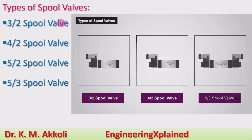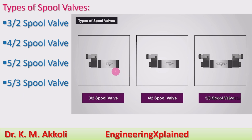Here, in the spool valve, there are different types. Those are the 3 by 2 spool valve, 4 by 2 spool valve, 5 by 2 spool valve, and 5 by 3 spool valve. Some valves are shown with their symbols: the 3 by 2 spool valve, 4 by 2 spool valve, and 5 by 3 spool valve.